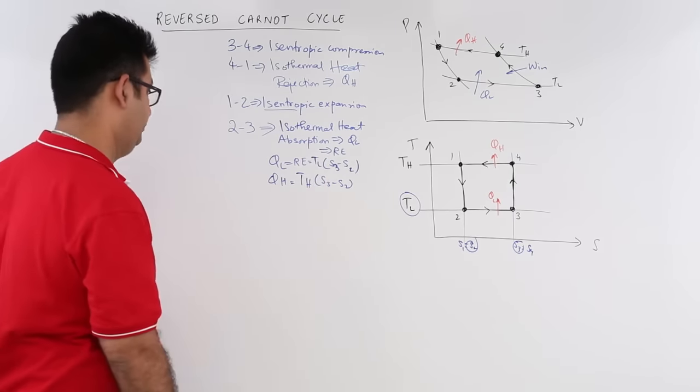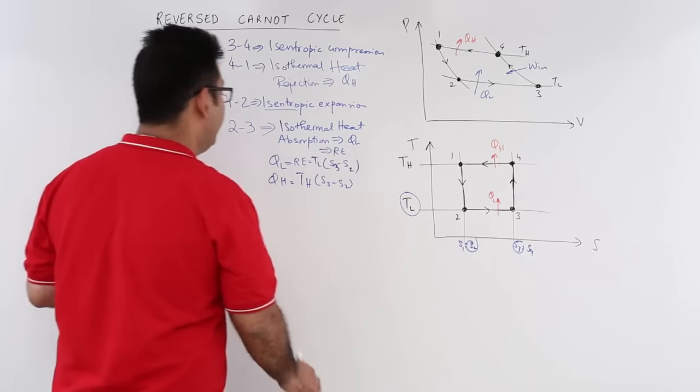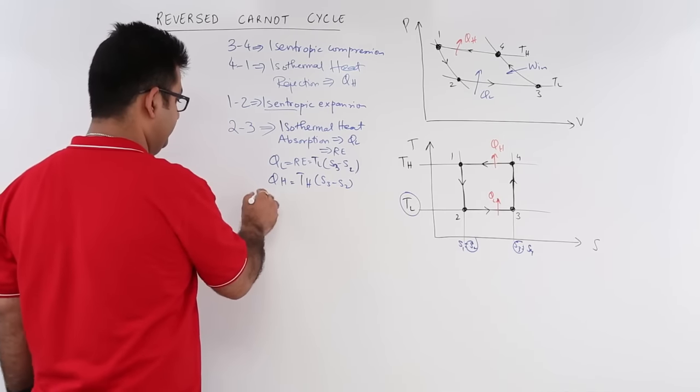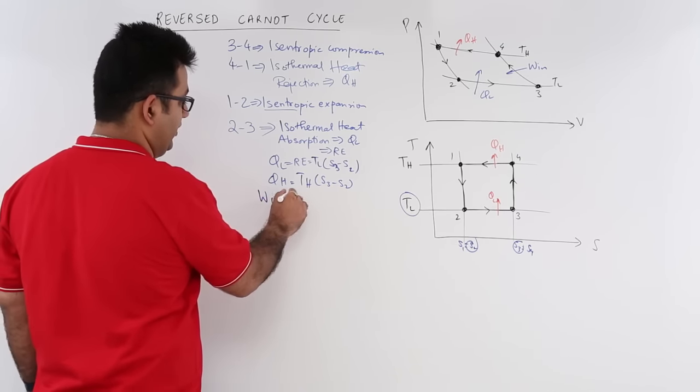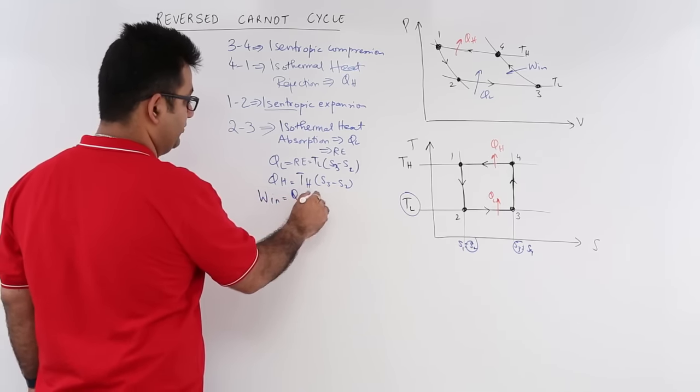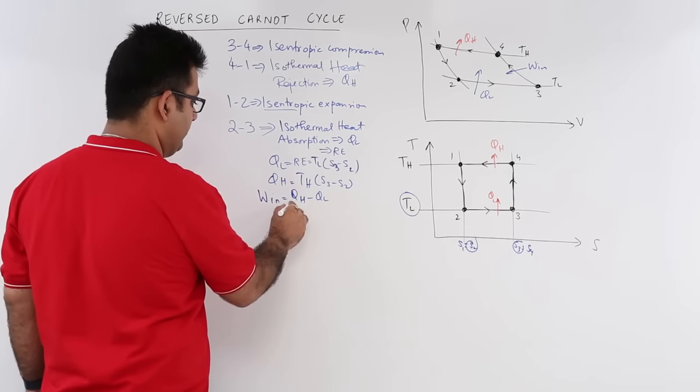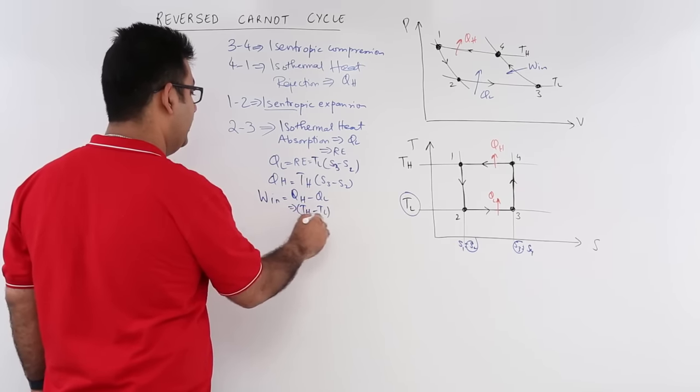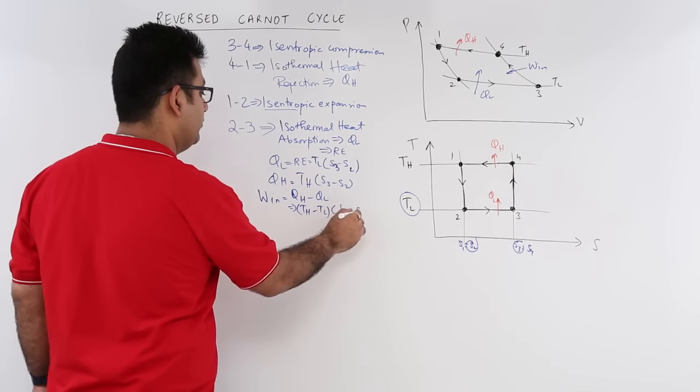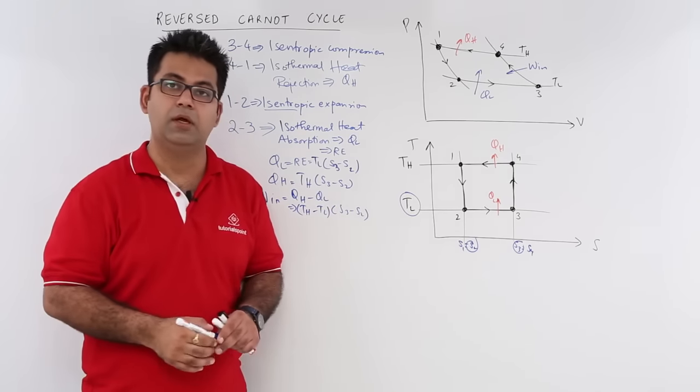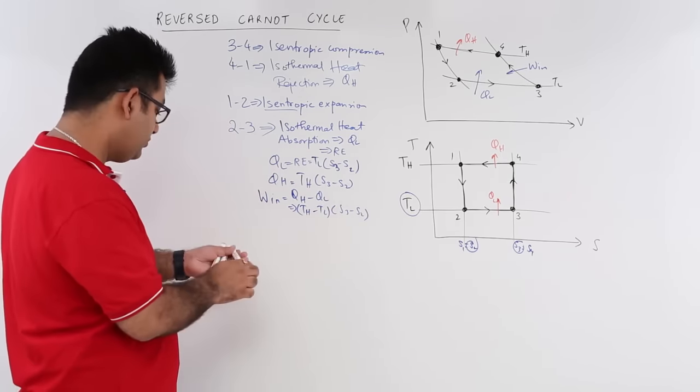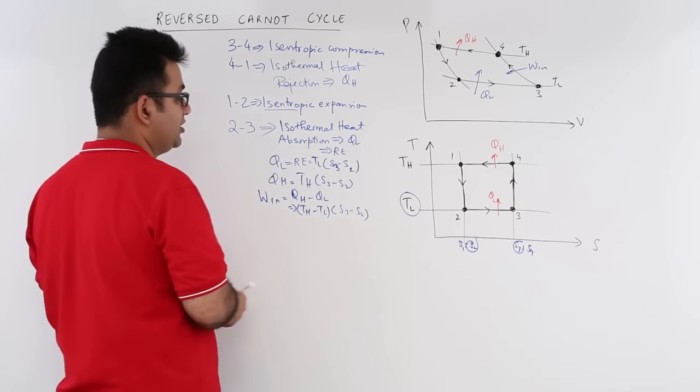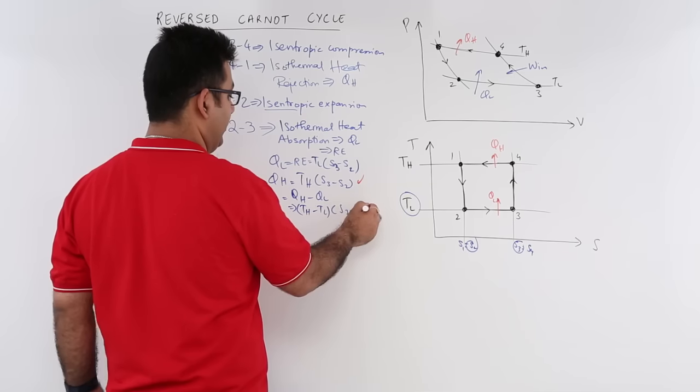Now the work input is the difference in these two heats. It becomes QH minus QL, which equals (TH - TL) times (S3 - S2).